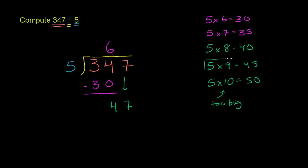So we want to go with 5 times 9 equals 45, or 5 goes into 47 nine times. 9 times 5 is 45. And then you subtract again. 47 minus 45 is 2. And then we're done. There's nothing else to bring down here.